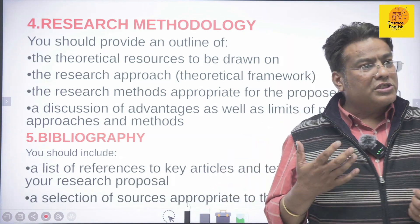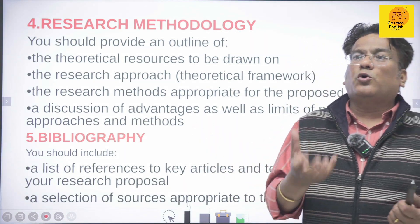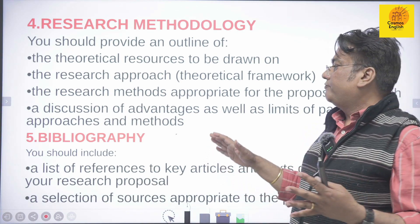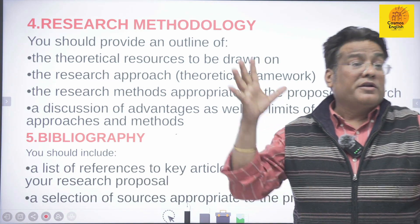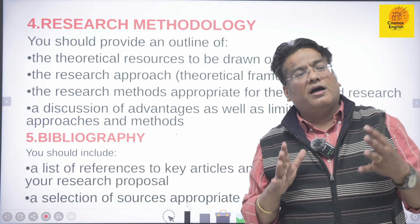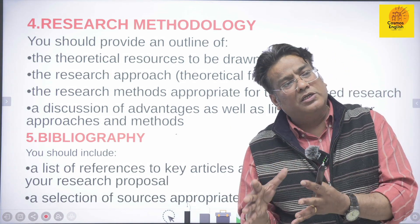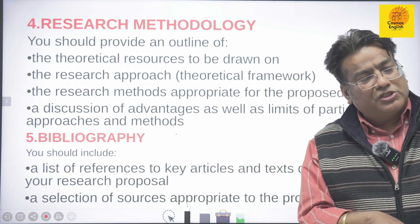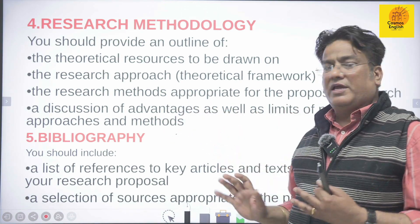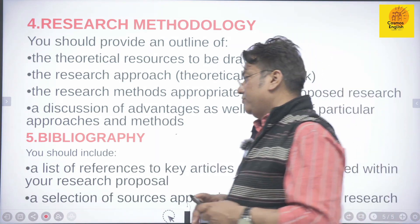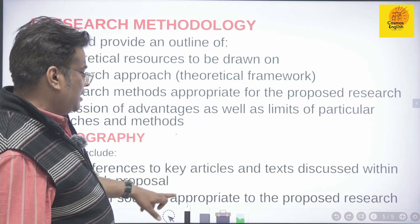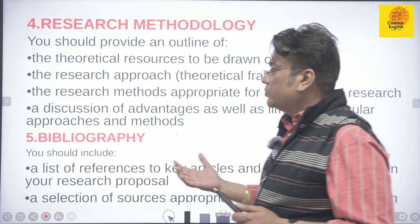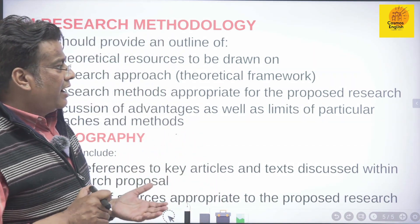The most important part of a research proposal — the one that mostly shows your worth as a research scholar — is the bibliography. You should include a complete list of books. It doesn't mean you have read all 200 books; it means these are the most important books written in the suggested area. Include a list of references to key articles and texts discussed within your proposal. Also include books you consulted but did not directly cite. Include a selection of sources appropriate to the proposed research, since you must have gathered ideas from various internet and other sources.